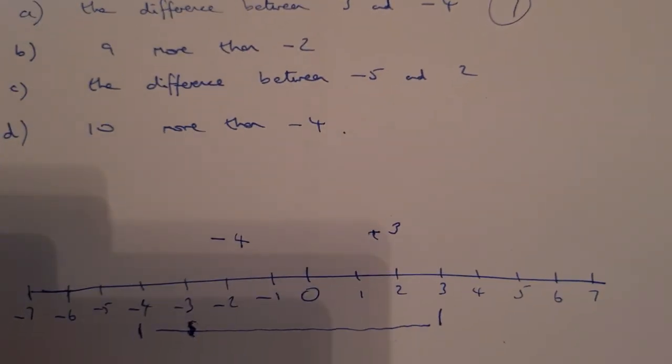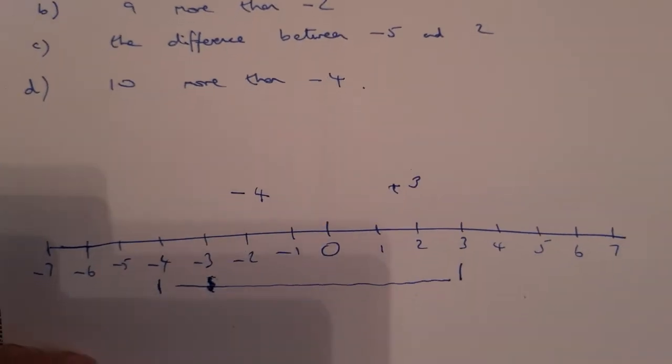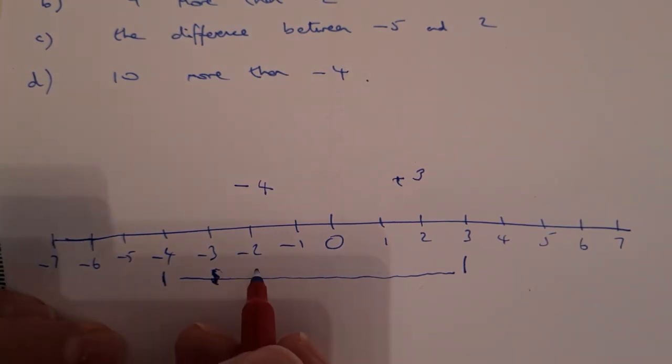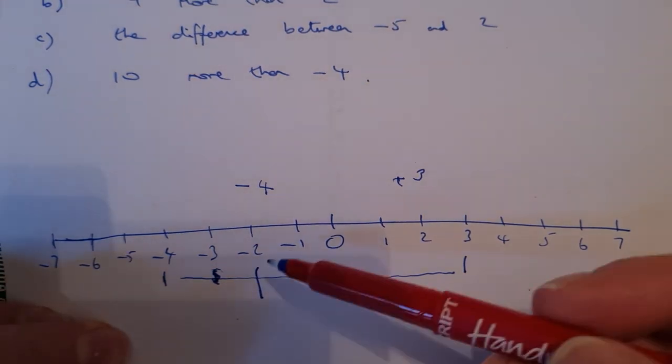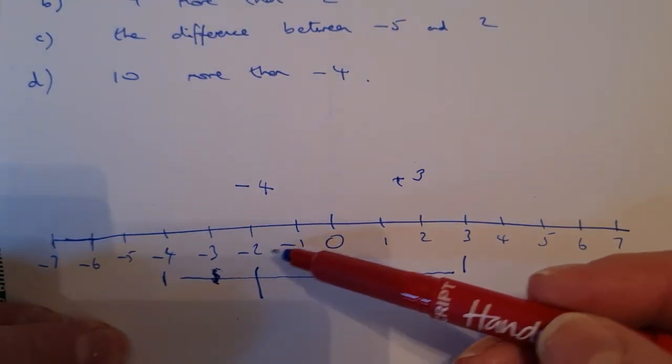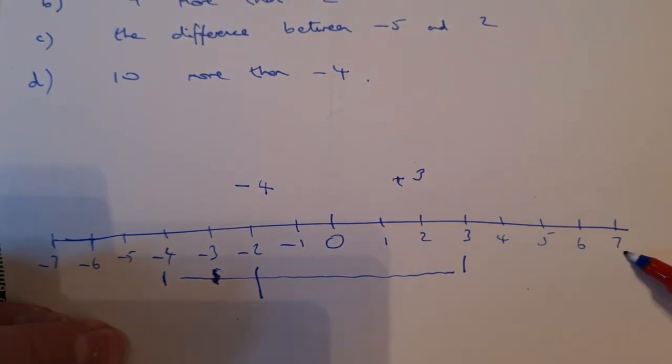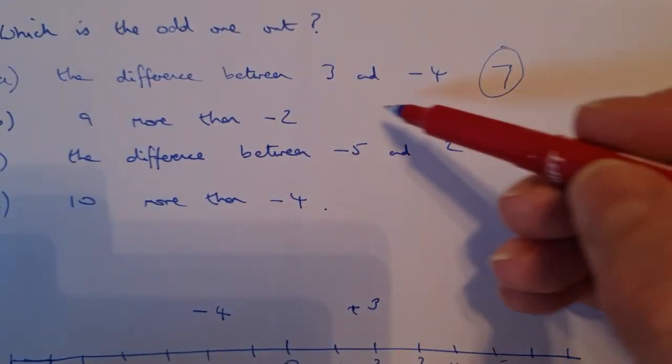Let's look at the second one. 9 more than minus 2. Well there's minus 2, and I want 9 more, so I'm adding 9 on. So I'm moving to the right. 1, 2, 3, 4, 5, 6, 7, 8, 9. And there I get 7 again.